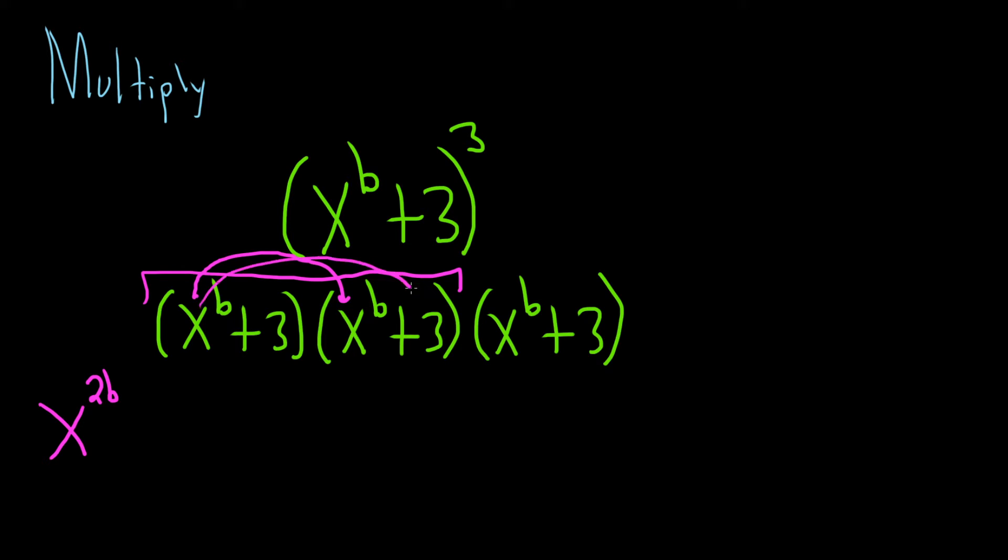And then x to the b times 3 is going to give us plus 3x to the b. Then we go to the next one. 3 times x to the b is 3x to the b. And 3 times 3 is 9. And we still have our parentheses, and we still have this other piece here, x to the b plus 3.